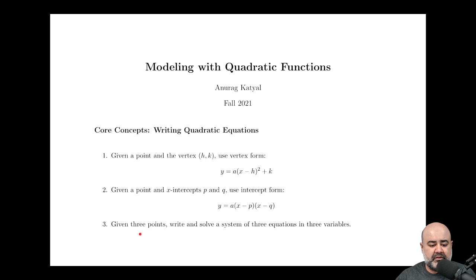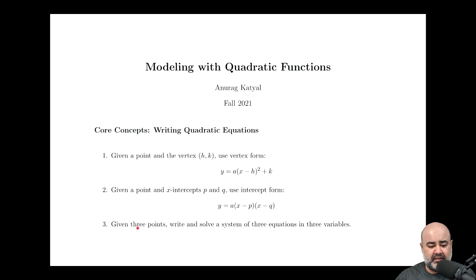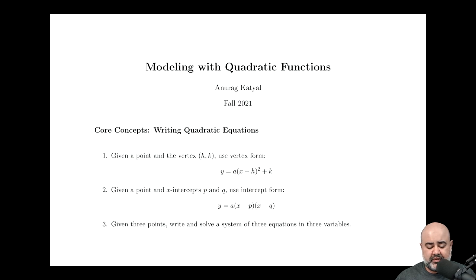And then finally, there's a third scenario — this will typically happen with tables of values — where you're given three points, and it might be more. You might be given five or seven points. But regardless, we choose three points to analyze, and then we write and solve a three-by-three system, or three equations in three variables.